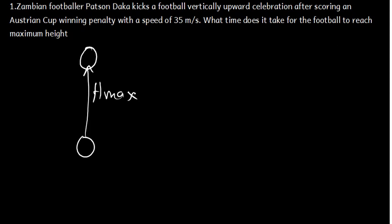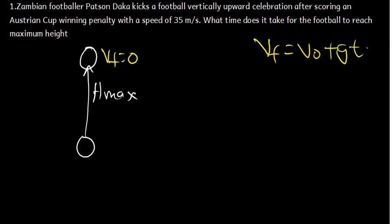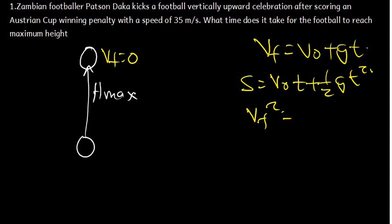The moment when the object reaches maximum height, the final velocity at that particular point is zero. There are three main equations you need to know. The first is: final velocity equals initial velocity plus g times t. The second is: displacement equals initial velocity times time plus half g t squared. The third is: final velocity squared equals initial velocity squared plus 2gs.